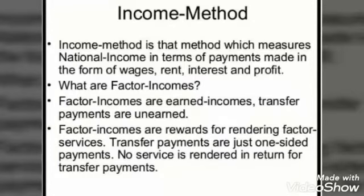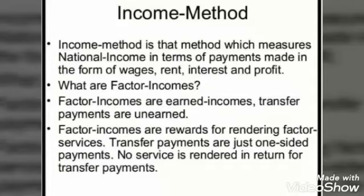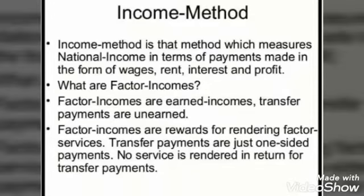The income method is also called the factor payment method. According to this method, national income is estimated in terms of factor payments, that is compensation of employees, rent, interest, and profit to the owners of factors of production — that is labor, land, capital, and enterprise — during an accounting year.